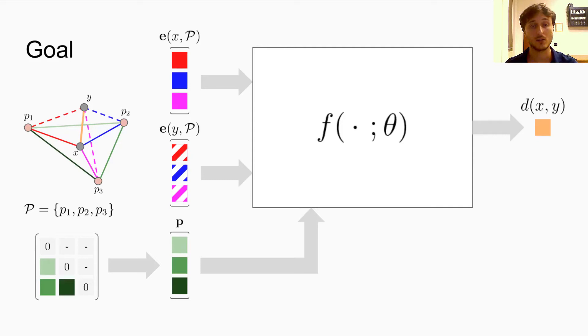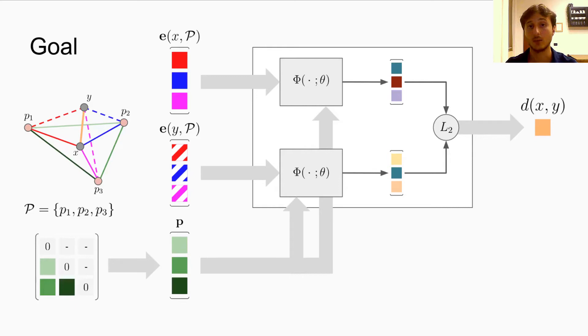Instead of fitting our model to directly produce the distance, we decide to create a submodel, phi, that independently embeds each input into another Euclidean space in such a way that the L2 distance between the embeddings of X and Y gives us the original distance between X and Y. This is usually done in metric learning scenarios, as it provides more flexibility and usability when building indexes. Each object can be processed independently and indexed with optimized indexes for Euclidean spaces.